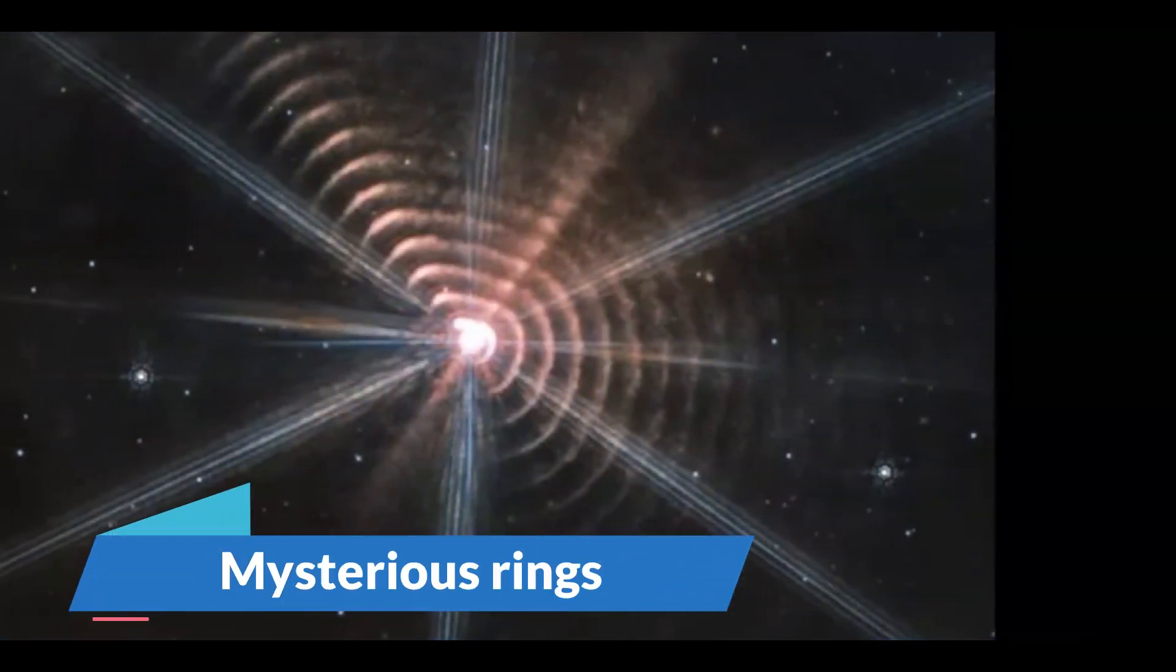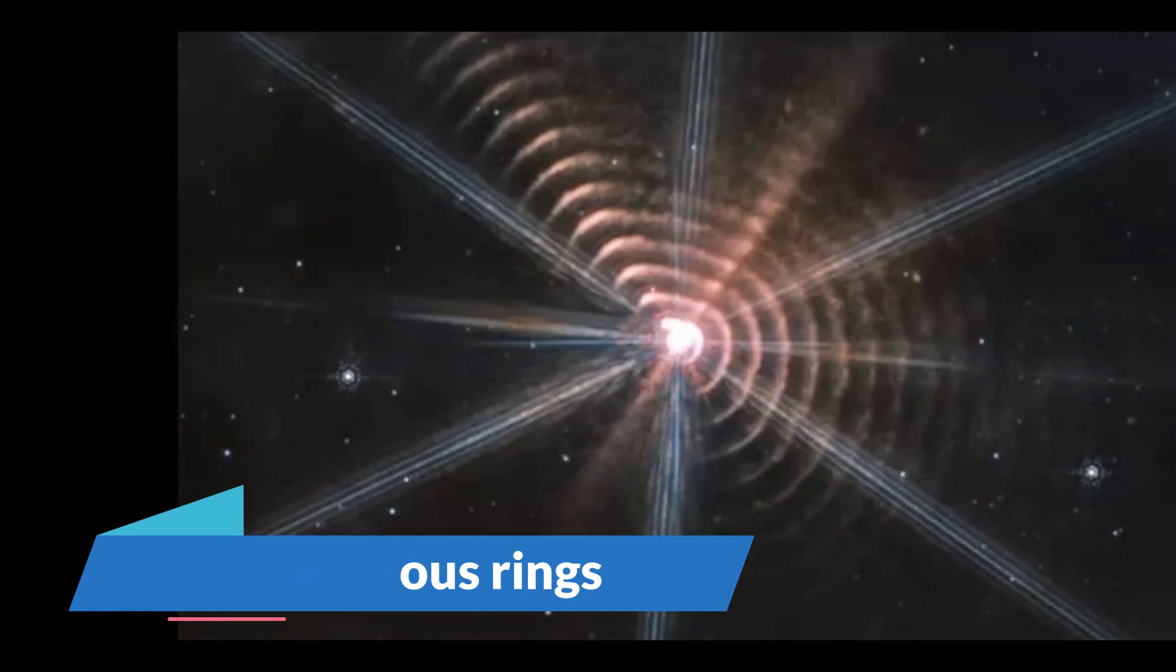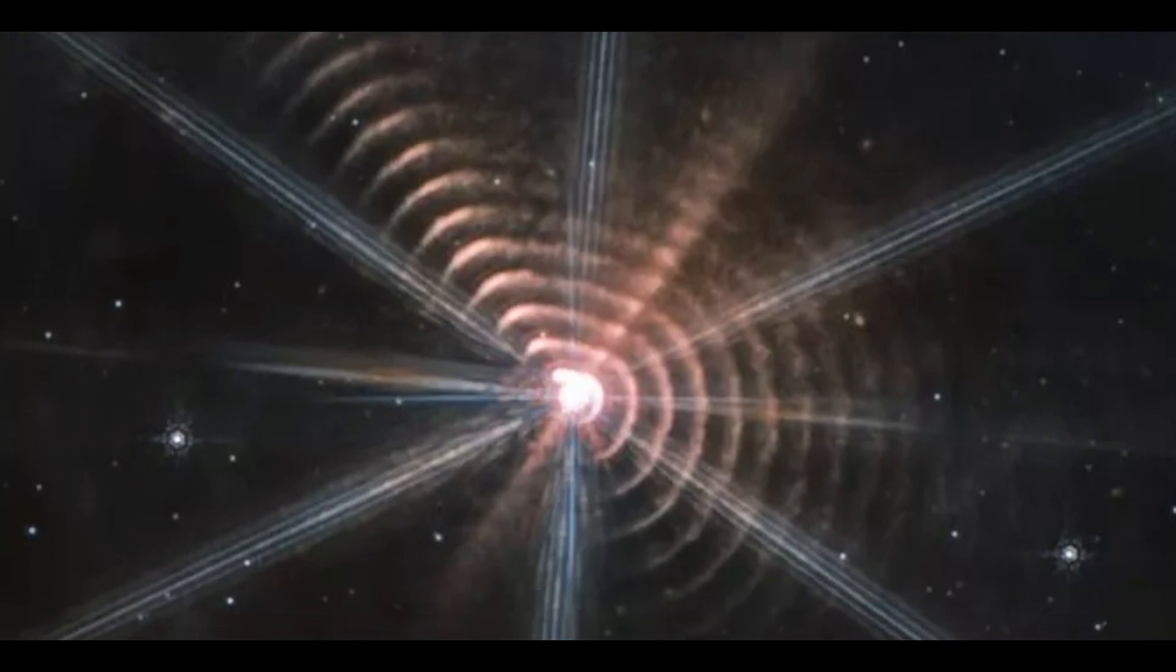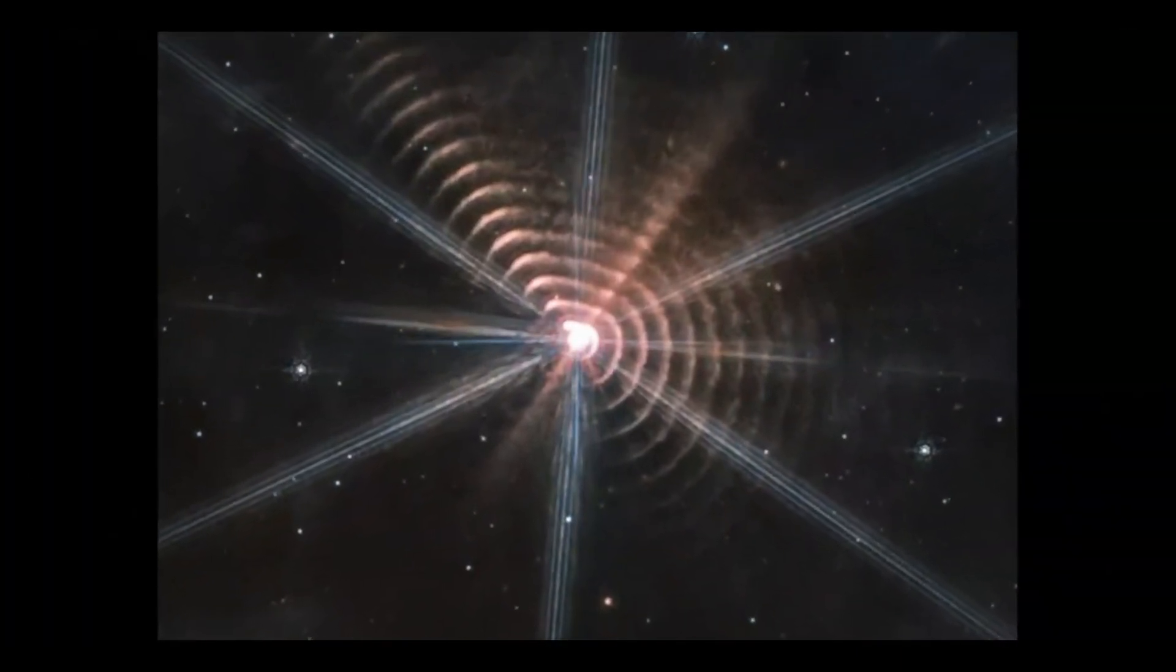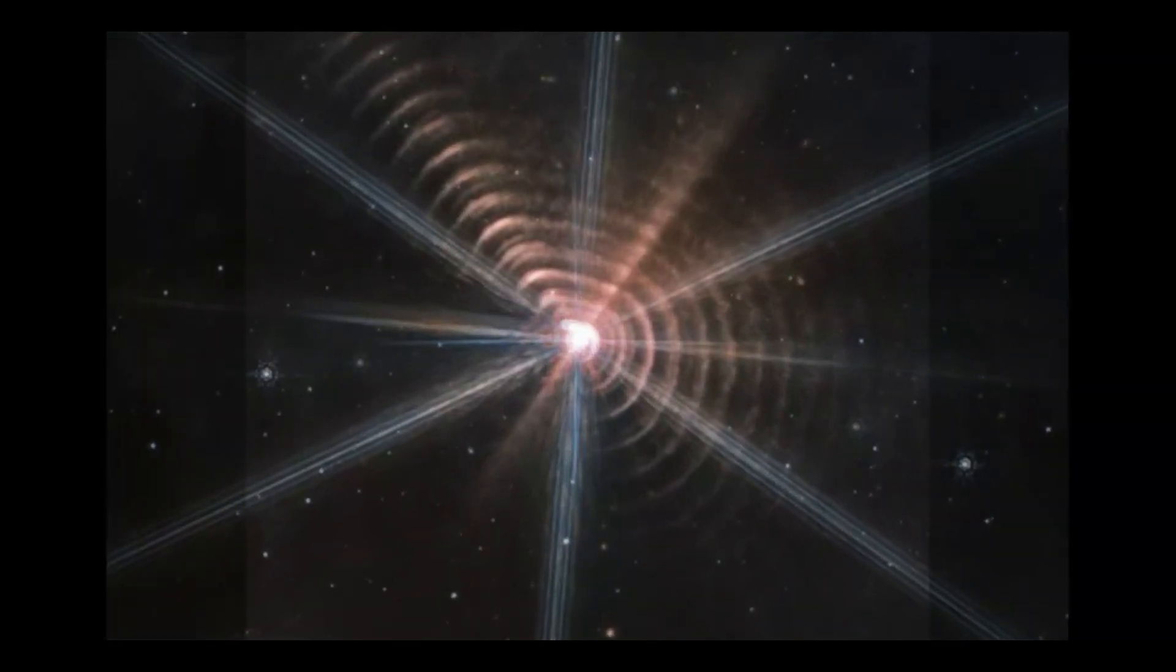Number 5. Mysterious Rings. The James Webb Space Telescope photographed enigmatic concentric rings around a distant star, which astronomers are still trying to understand. Judy Schmidt, a citizen scientist, posted the photograph on Twitter in July, triggering a flood of responses and puzzlement.